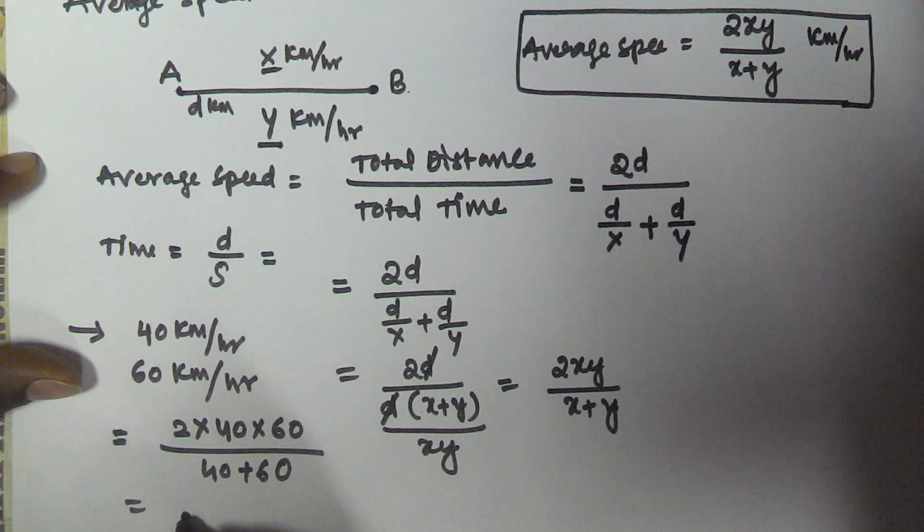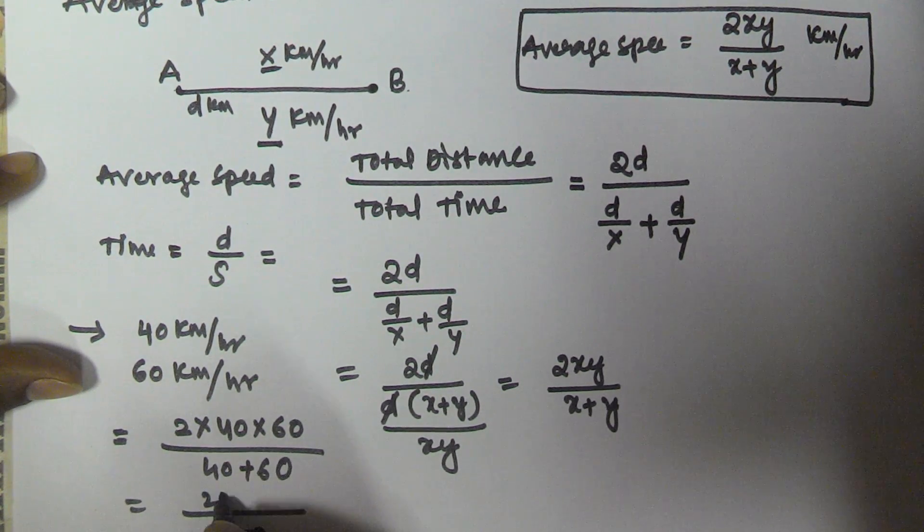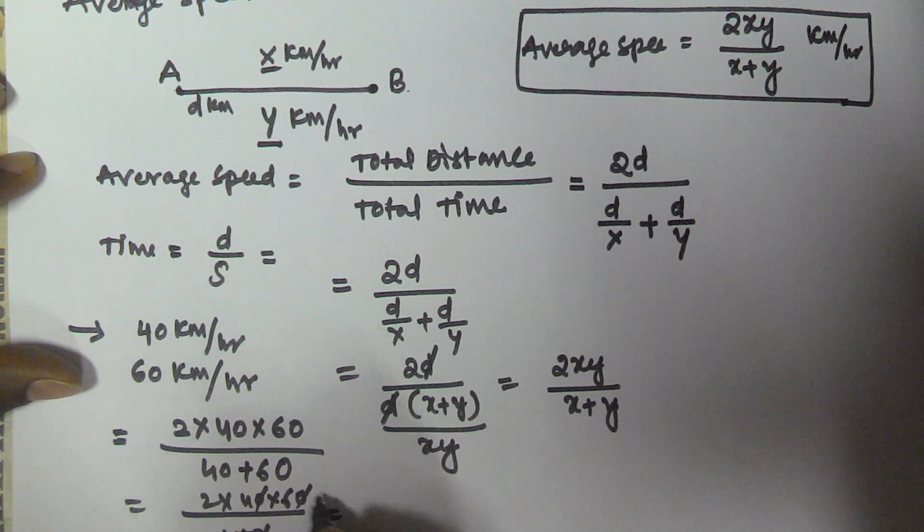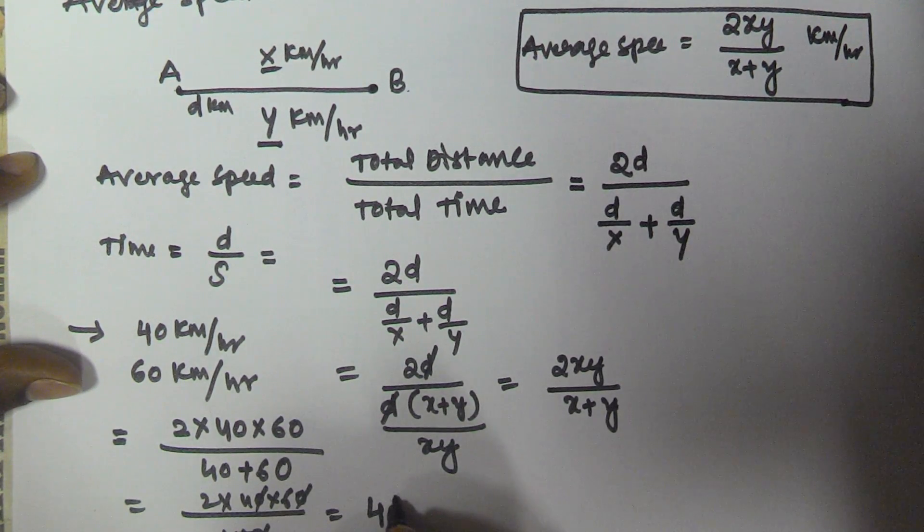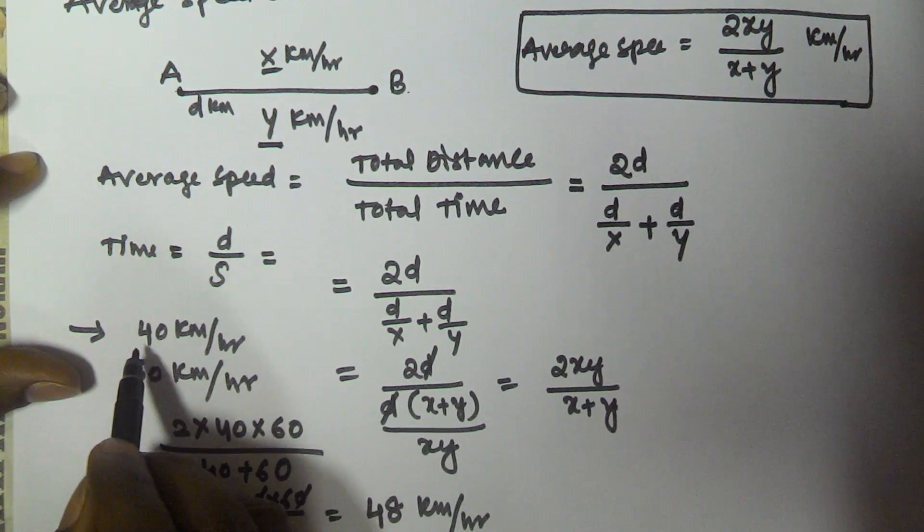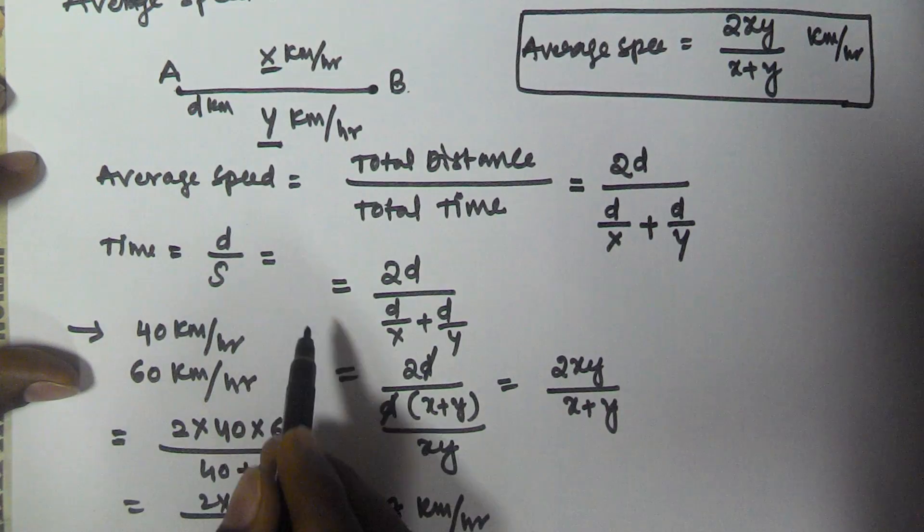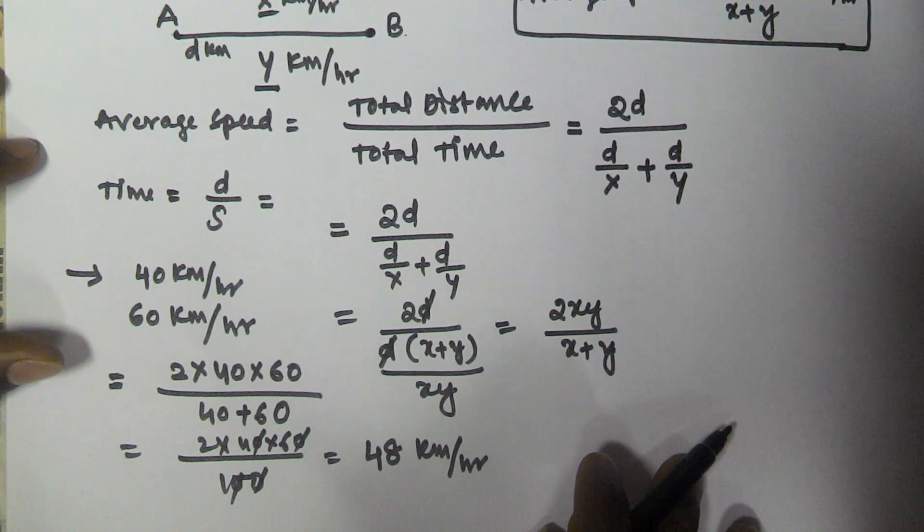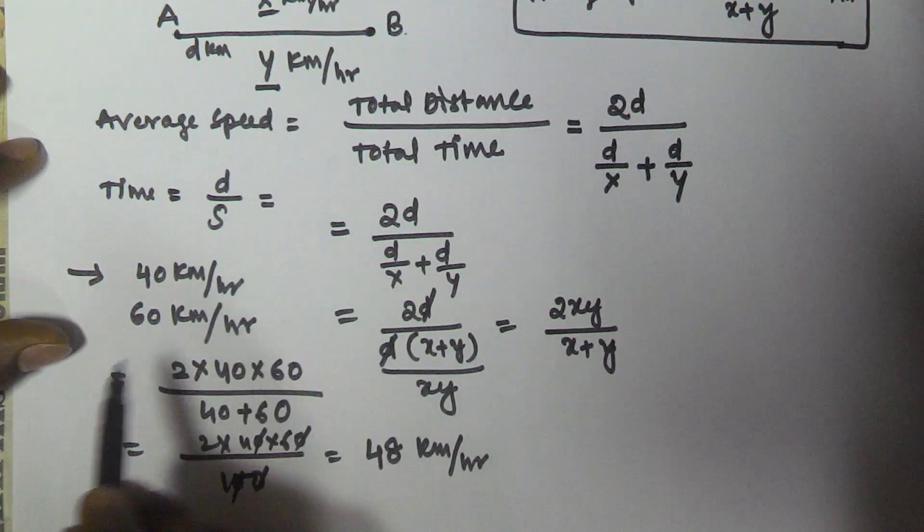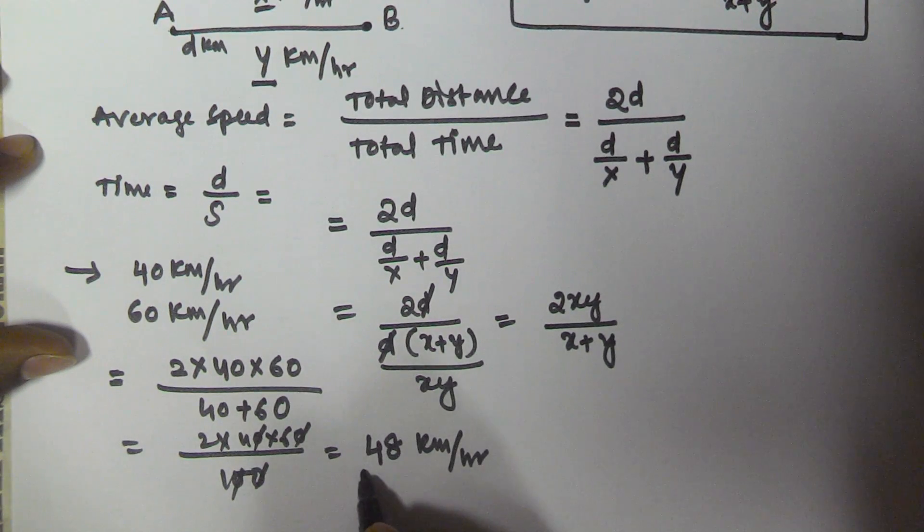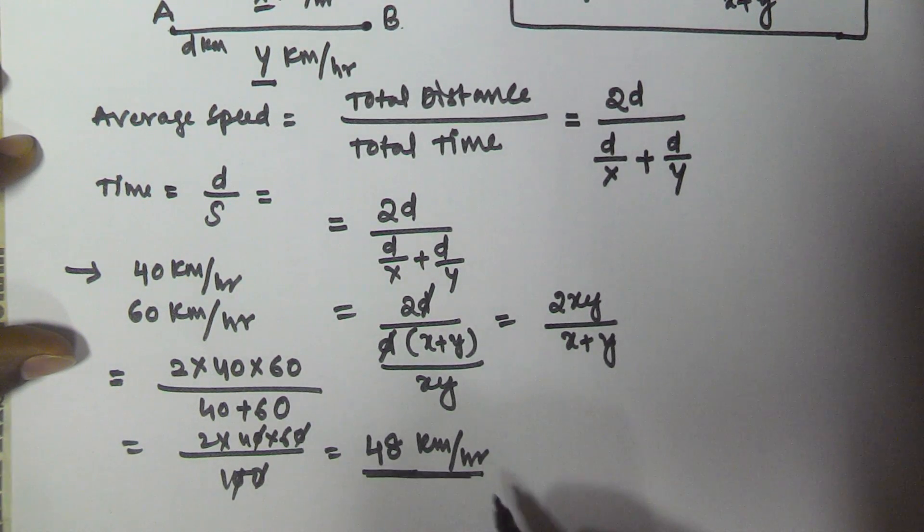So 40 plus 60 is 100 and then 2 into 40 into 60, zeros cancel, 2 and 4 is 80. So 8 into 6 is 48 km per hour. So if he travels 40 km per hour from home to office and then 60 km per hour from office to home, then the average speed is going to be 48 km per hour.